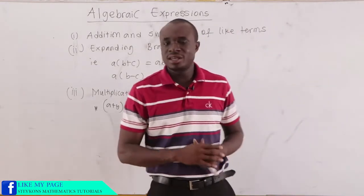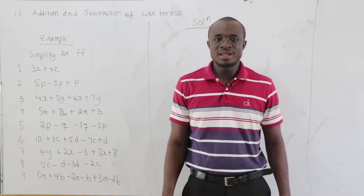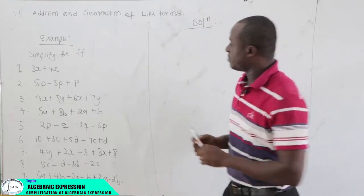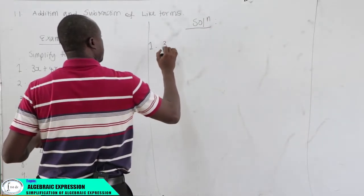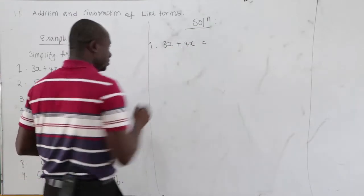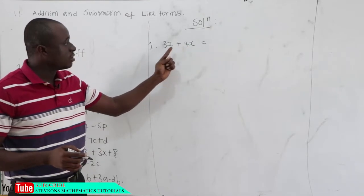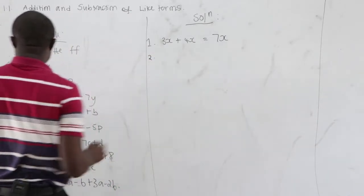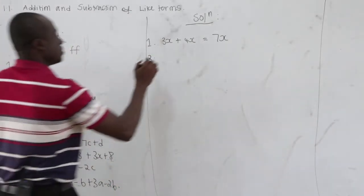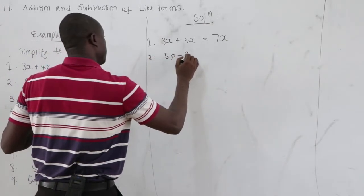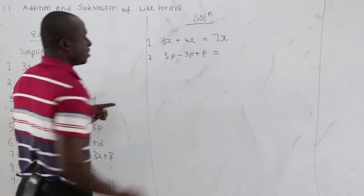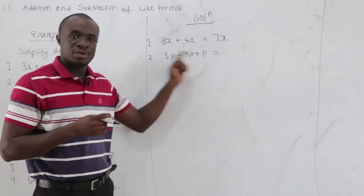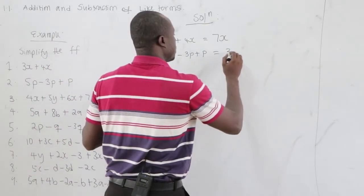Now let's consider the first example — simplify the following. For addition and subtraction of like terms, our first one: 3x plus 4x is just 7x. Our second one: 5p minus 3p plus p. We get 5p minus 3p equals 2p, and 2p plus p equals 3p.